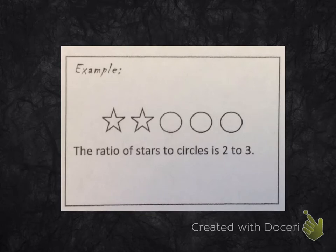For example, the ratio of stars to circles in this picture is 2 to 3, because there are two stars, one, two, and then there are three circles, one, two, three. So the ratio of stars to circles is 2 to 3.